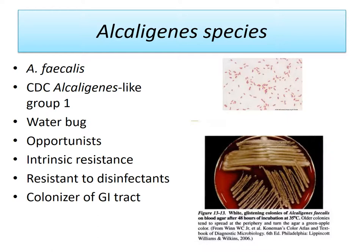Another non-fermenter group we have to cover is Alcaligenes species. The major one is Alcaligenes faecalis, which used to be called Alcaligenes odorans. You have to know the old name because old doctors and microbiologists may remember it, and we keep printing the old name for a number of years until people get used to the new name. We also have the CDC Alcaligenes-like group one — an isolate not yet completely characterized by taxonomists. Similar to Acinetobacter, Alcaligenes causes nosocomial infections. In particular, it has been isolated in many cases of septicemia arising from contaminated fluids — hemodialysis fluids or intravenous fluids. In an immunocompromised patient, even one or two bugs can lead to bacteremia.